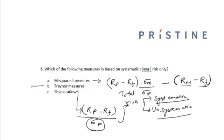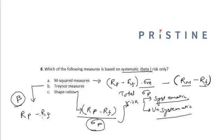However, the Treynor measure is based only on systematic risk — that is, the beta of the stock — which is a measure of systematic risk. It is defined as extra return per unit of increase in beta of the portfolio. You can see there is a similarity between the Treynor measure and the Sharpe ratio.